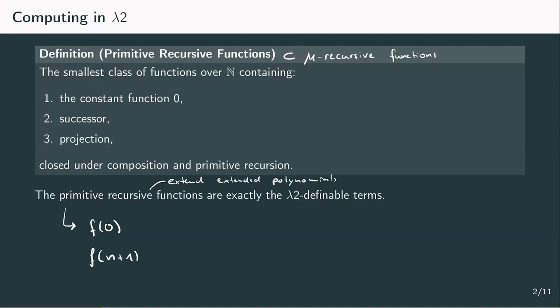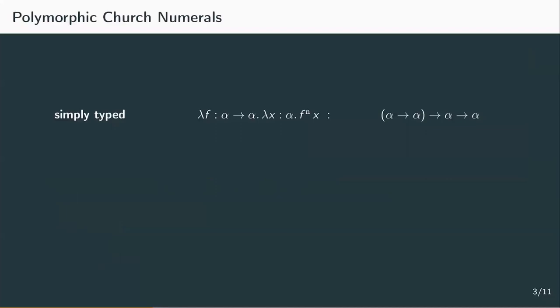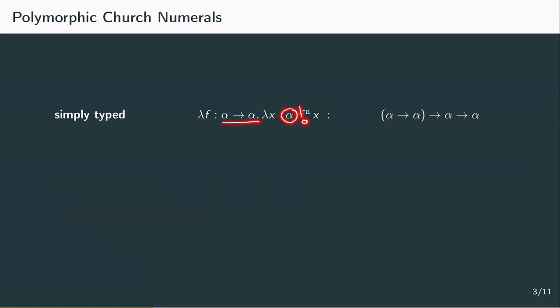To define primitive recursion, we need a new form of church numerals. The simply-typed church numerals take an f of type alpha to alpha, and an x of type alpha, and apply the function f n times to x. This term has type alpha to alpha to alpha. It's important that x is of the same type as the one that the function f works on, and although this works quite well in the simply-typed lambda calculus, we're still limited to church numerals that work on that specific type alpha defined beforehand.